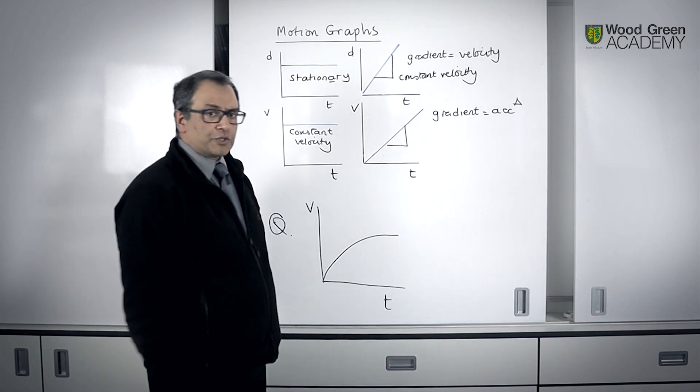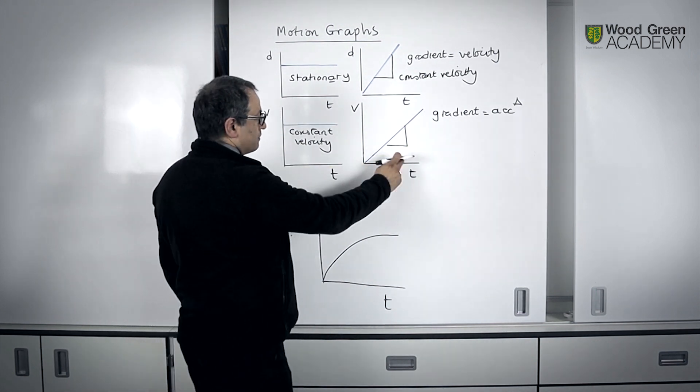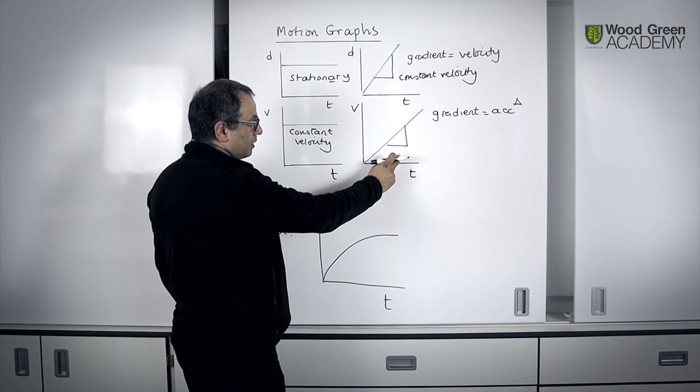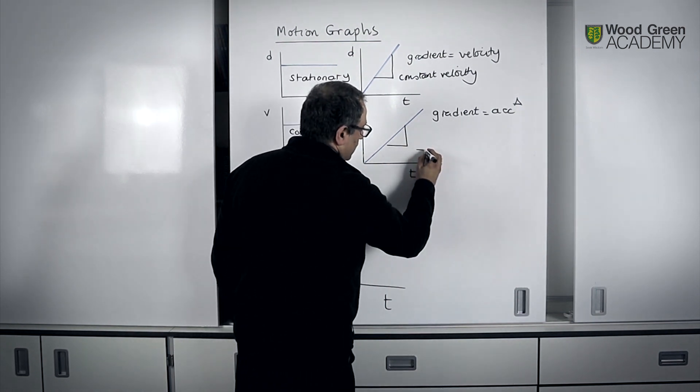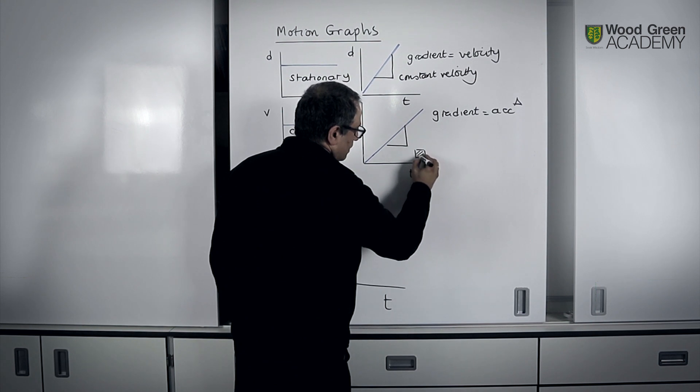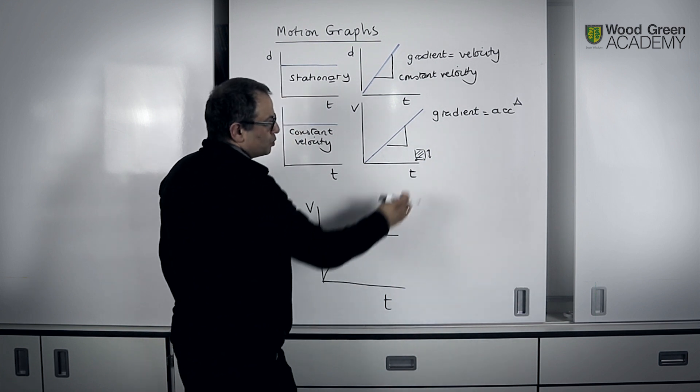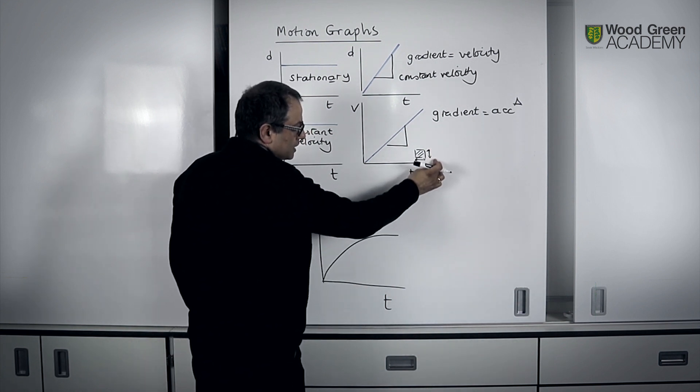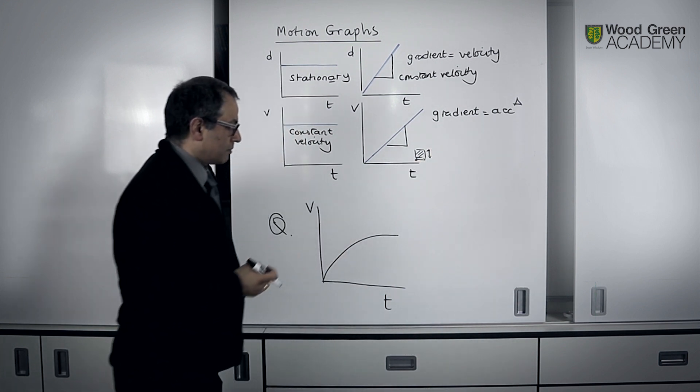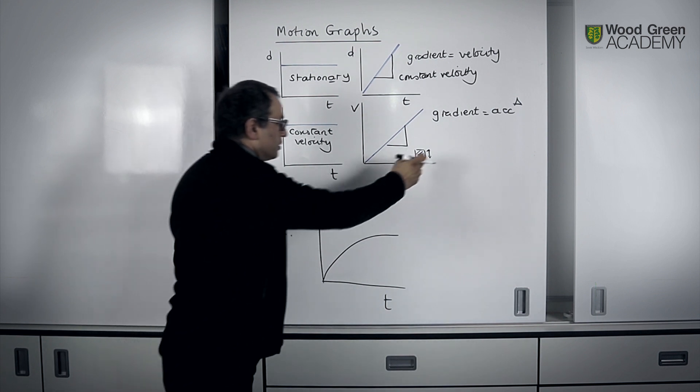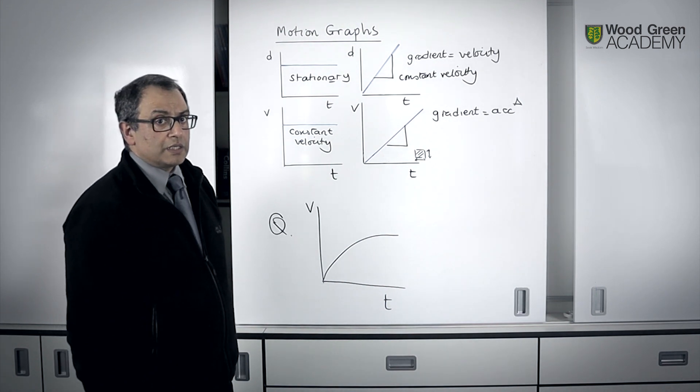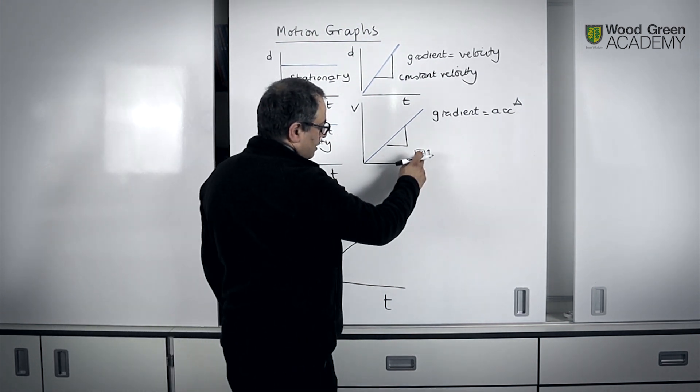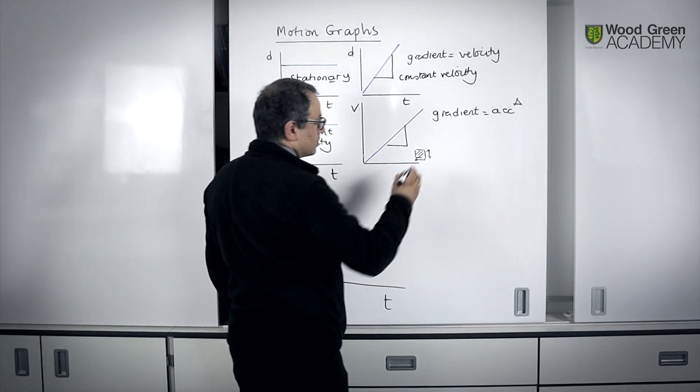Now, one other extra piece of information provided by velocity-time graphs, both of these, for a velocity-time graph, is that if I take a square here, a square, and I worked out the area of the square, this would be the velocity, or the distance, this would be the time, sorry, the velocity or the speed, and this would be the time. Now, distance is speed times time. So, the area represents the distance travelled.